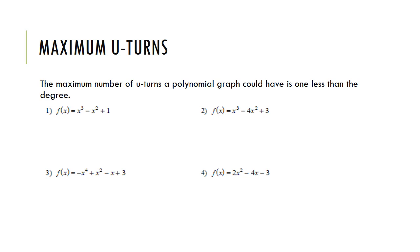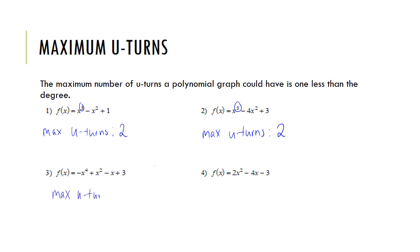Just as you can identify the minimum degree from the number of u-turns, you can find the maximum number of u-turns based on the degree. For number 1, the degree is 3, so the maximum number of u-turns is 1 less than that, which is 2. For number 2, the same idea applies. For number 3, the degree is 4, so the maximum number of u-turns is 3. For the last example, the degree is 2, so the maximum number of u-turns is 1.